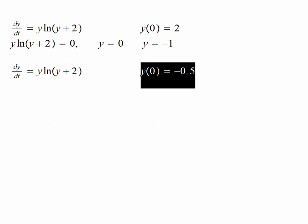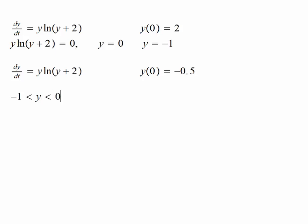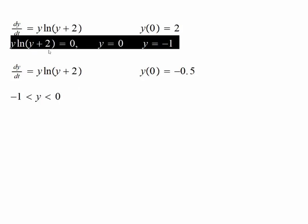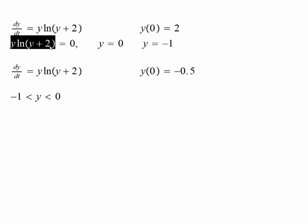Now let's take up this question that we want to sketch the solution corresponding to this initial condition, that is y 0 is negative 0.5. You can see that negative 0.5 is between negative 1 and 0. And we can also notice that between these two values, this quantity is negative.